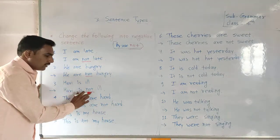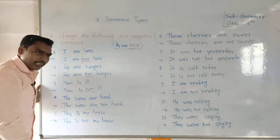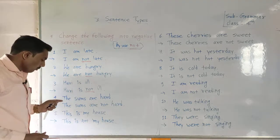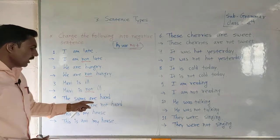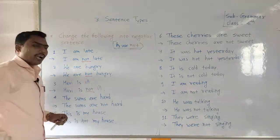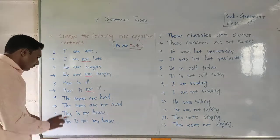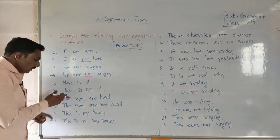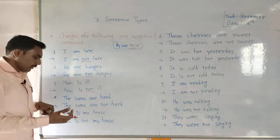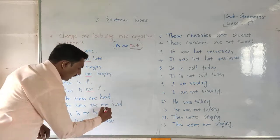The negative sentence is formed by adding 'not.' Now the fourth question: 'The sums are hard.' We change this positive sentence into a negative: 'The sums are not hard.'